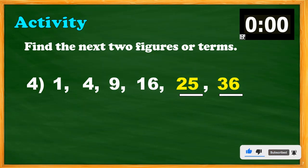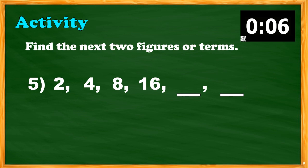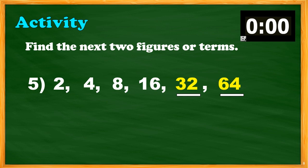And lastly, Question number 5: find the next two terms in this sequence — 2, 4, 8, 16. Timer starts now. You may comment down your answer in the comment section below. Time is up. The correct answer is 32 and 64. Good job, Grade 6.